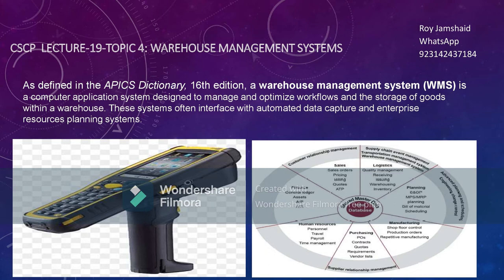Your WMS gets input from the ERP and also sends information back to the ERP. For example, when you're scanning barcodes — say you're receiving 500 units in your warehouse — you keep scanning those 500 units against a purchase order number, and that information then moves into the ERP, confirming you have received that stock.